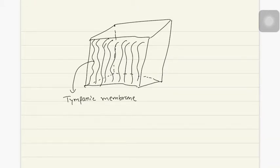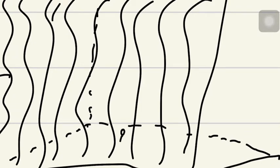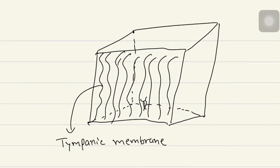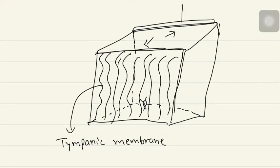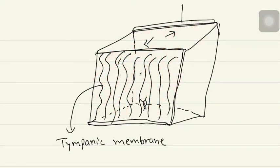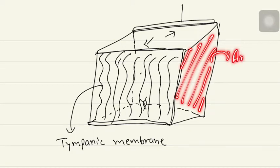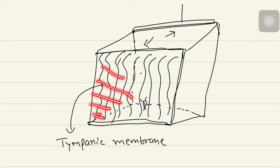Let me orient you to this room. Suppose we are sitting inside the room. This curtain is lateral, and the opposite wall is medial — medially means closer to the midline, while lateral means away from the midline. If this is the lateral wall and this is the medial wall, then this will be the anterior wall, and the wall hiding behind will be the posterior wall.